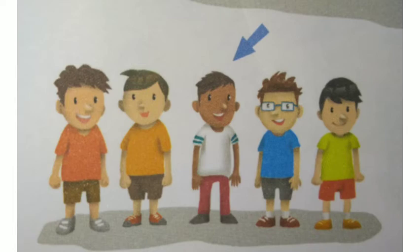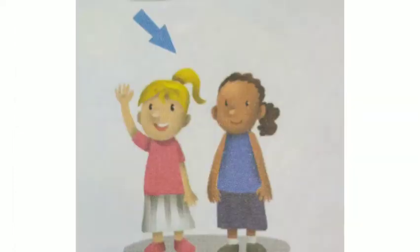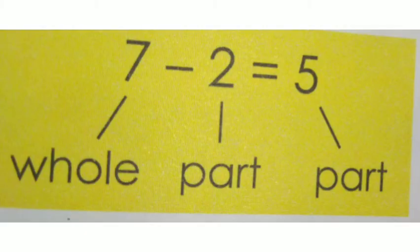Listen carefully. We have taken away 2 girls from the group. After taking away 2 girls from the group of 7, the remaining is 5. So, 7 minus 2 equals 5. 7 is whole. 2 is part. Whole minus part equals part.